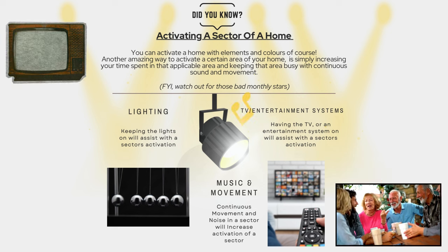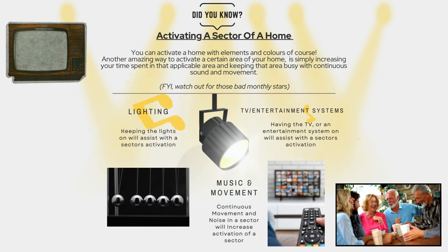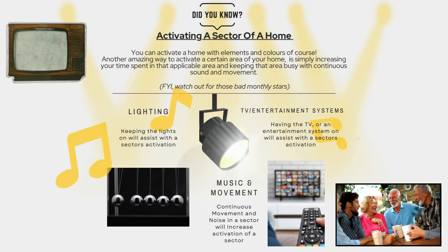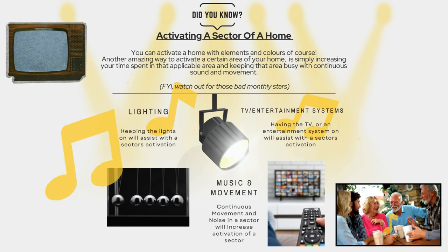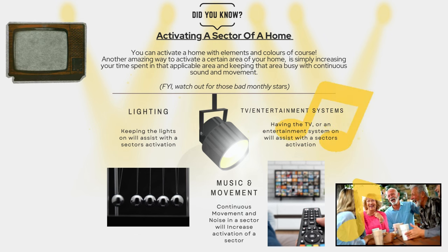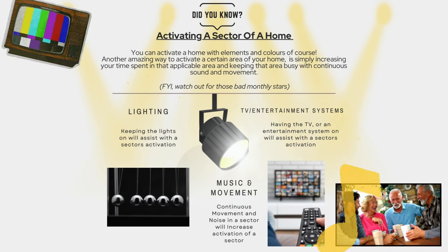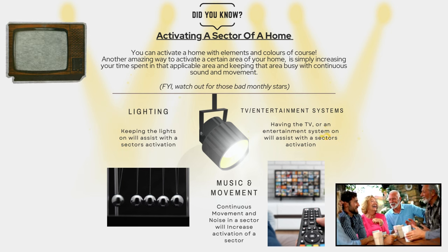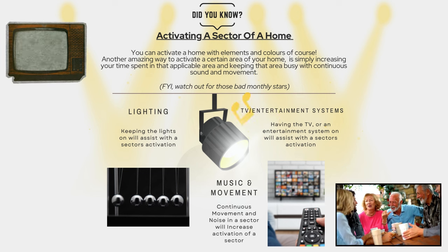Last but not least, another way to activate an area of the home is very simple: just increase the time you spend in that area, because keeping it busy with continuous sound and movement will activate that area — it's a very yang energy. Things such as having the TV on, having music going in the background, having your lights on — that's a bright, busy yang energy, and that's going to increase and activate that star in that sector. Keep a lookout for your monthly stars as well; if it's a bad annual star, it's best to decrease the usage of your energy in that sector. If you want to work at activating, you can also look at moving décor such as pendulum clocks or certain objects that continuously move.